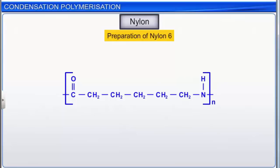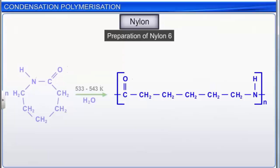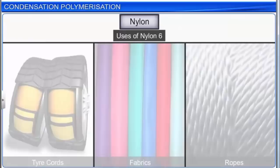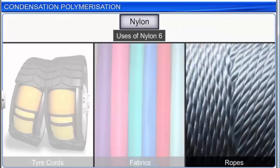Nylon 6, another synthetic fiber, resembles the properties of nylon 6-6 closely. To obtain nylon 6, caprolactam is subjected to prolonged heating with water at a high temperature of 533 to 543 Kelvin. Nylon 6 is known by its trade name Perlon L, and is used to make tire cords, fabrics, and ropes.